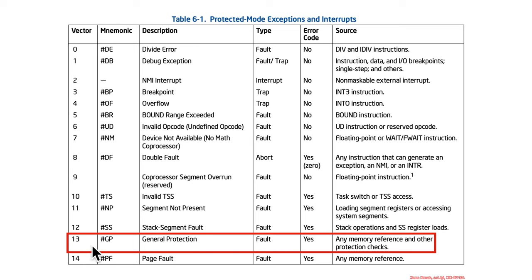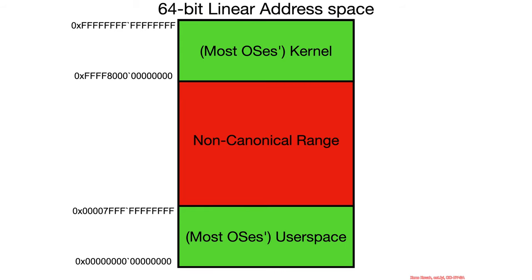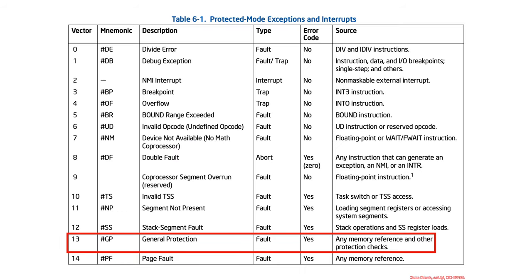The general protection fault, as mentioned in the interrupt section, is interrupt 13. It's a general catch-all used for all sorts of different types of errors when assembly instructions are used in unusual ways. You'll see it all over the place if you look at the details of assembly instructions.